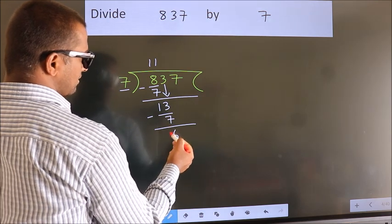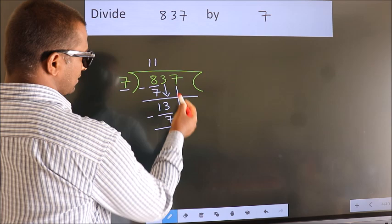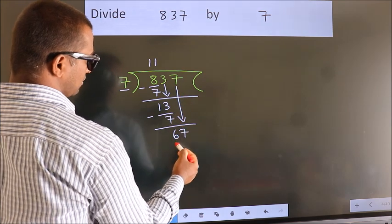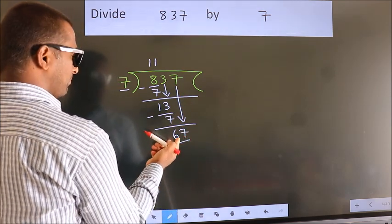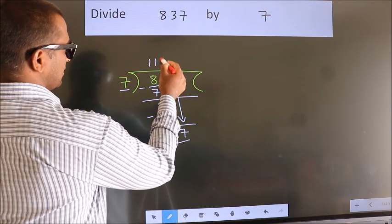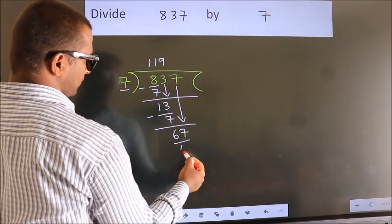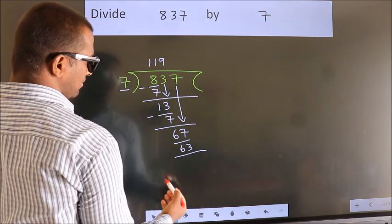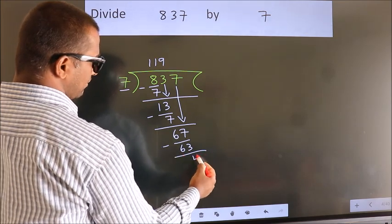After this, bring down the beside number, so 7 down, so 67. A number close to 67 in 7 table is 7 times 9, 63. Now we subtract, we get 4.